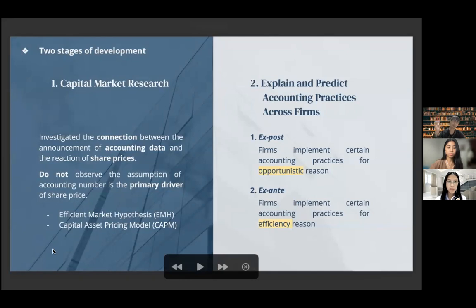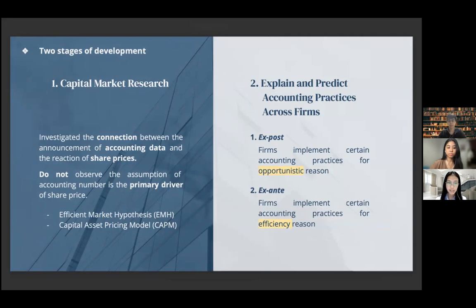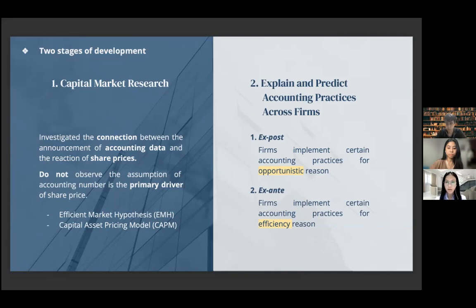There are two stages of positive accounting theory development. The first is capital market research, which investigates the connection between the announcement of accounting data and the reaction of share price. This theory does not assume that an accounting number is the primary driver of share price; hence an accounting report may be useful to explain the manager's stewardship function. The theories incorporated are the efficient market hypothesis and capital asset pricing model.